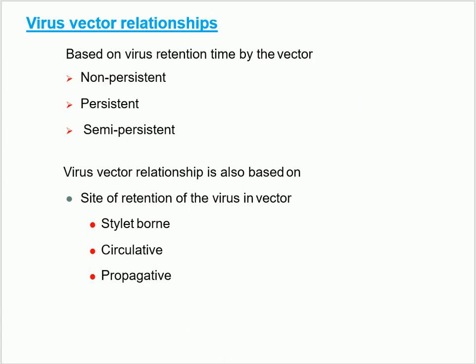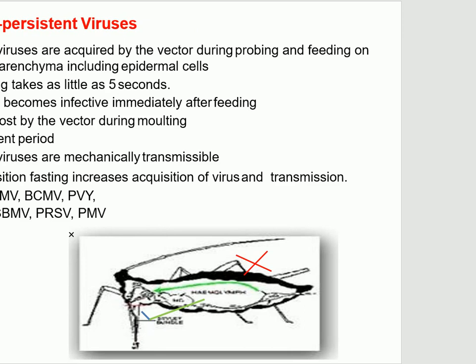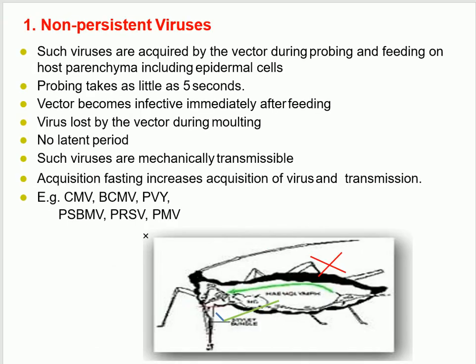Now let us see the virus-vector relationship. Virus-vector relationship is based on virus retention time by the vectors. According to this, they are divided into three groups: non-persistent, persistent, and semi-persistent. This virus-vector relationship is also based on the site of retention of the virus in the vector. According to this, they are also classified as stylet-borne, circulative, and propagative viruses.